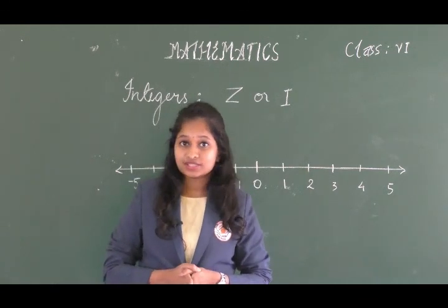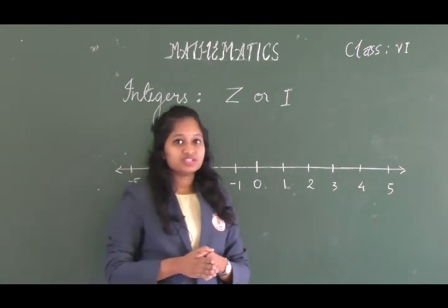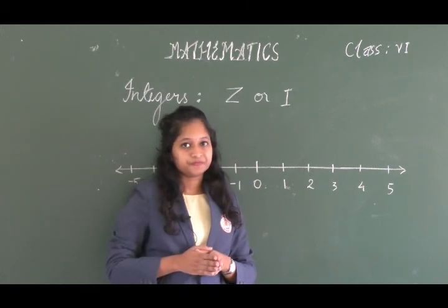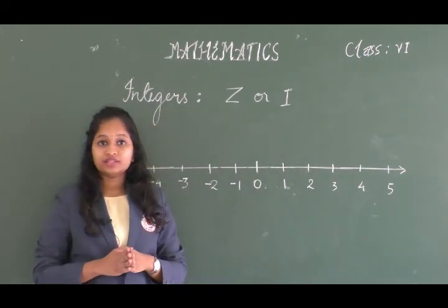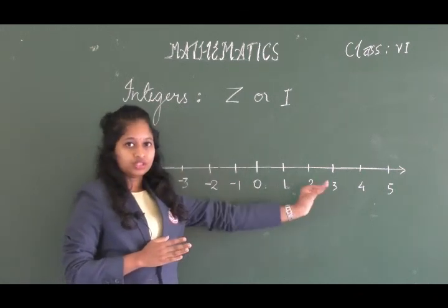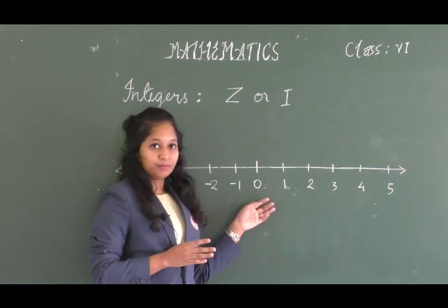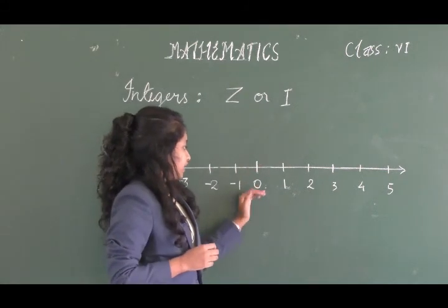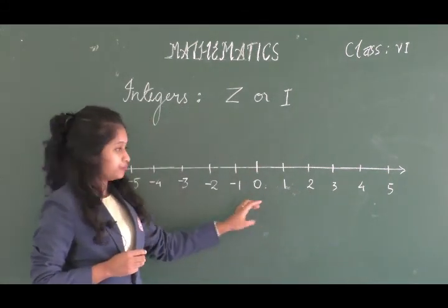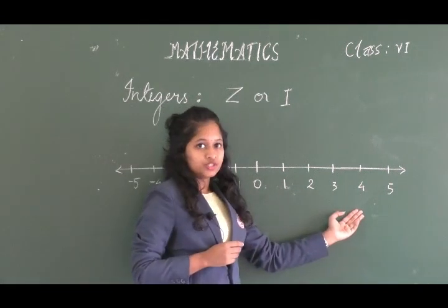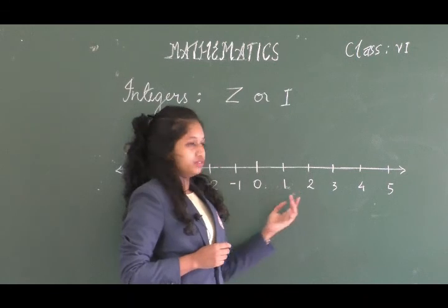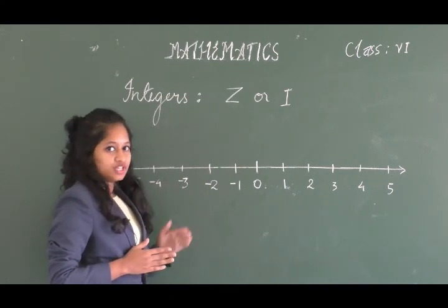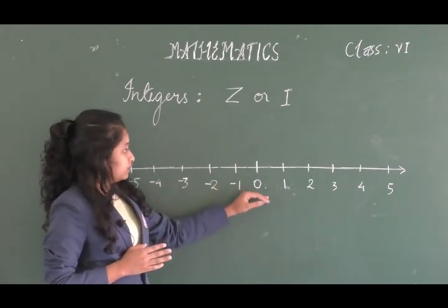Positive numbers, zero, and negative numbers form a collection of numbers called integers, and we can represent integers as Z or I. To draw a number line, draw a straight line and mark points with equal distance, with zero in the middle, positive numbers to the right, and negative numbers to the left.